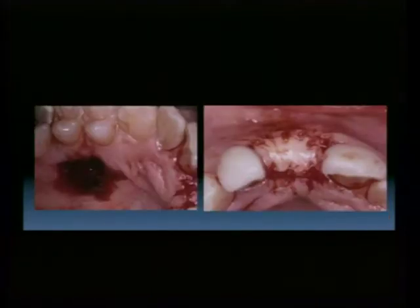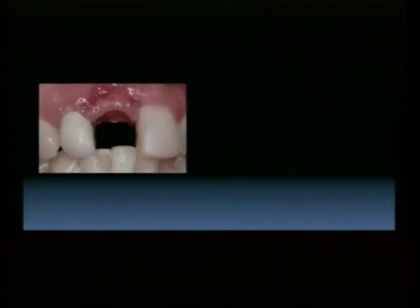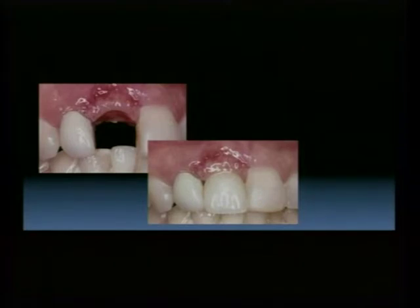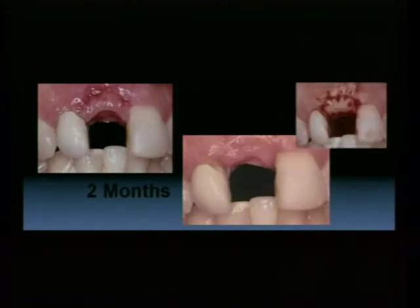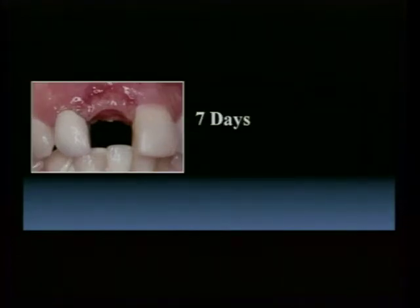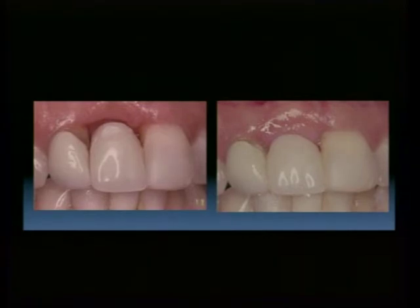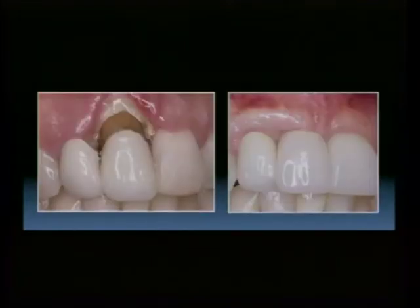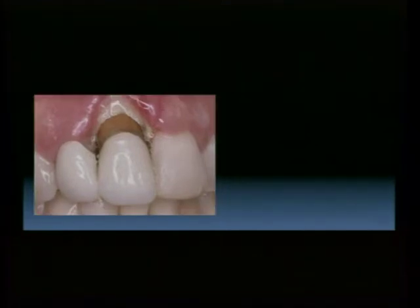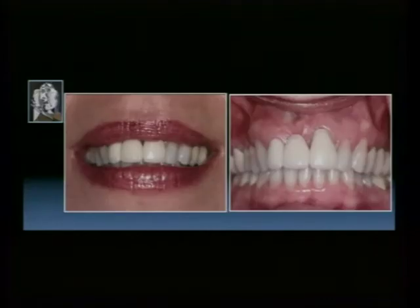We tackled this first with horizontal ridge augmentation to recoup proper ridge width, then secondarily with an onlay procedure of soft tissue, modifying the pontic appropriately to avoid too much pressure on the graft. At two months there was significant shrinkage, so a second soft tissue augmentation was performed. After the second augmentation, we achieved a pleasing aesthetic result and resolution of the majority of the severe alveolar ridge deficiency, with long-term soft tissue stability around the pontic.